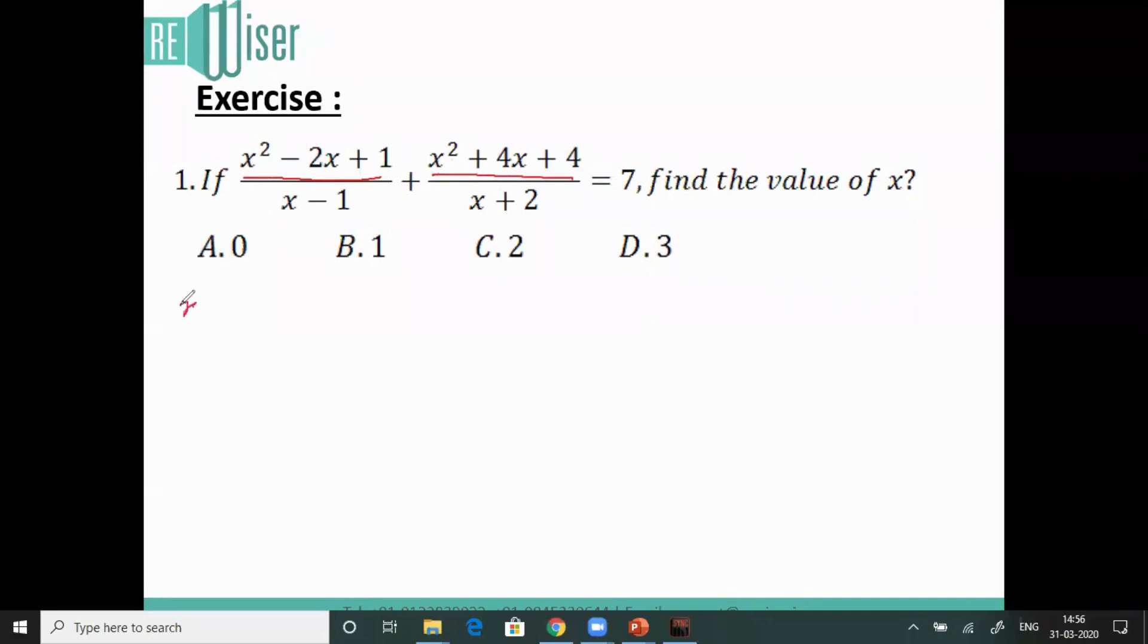If I take this separately, which is x squared minus 2x plus 1, this can be factorized as x squared minus x by splitting the middle term minus x plus 1. It can be written as x minus 1 into x minus 1, which is x minus 1 whole square.